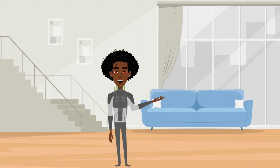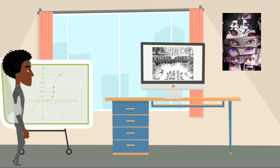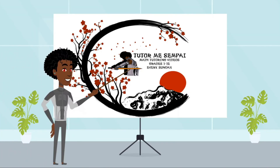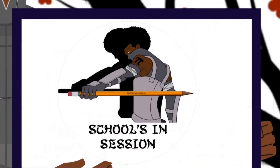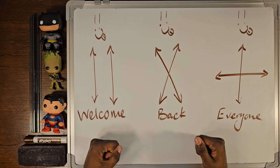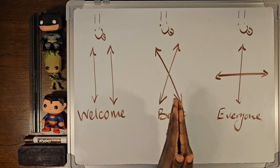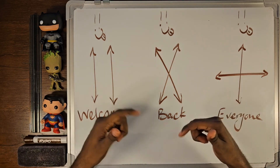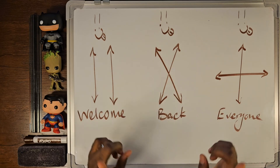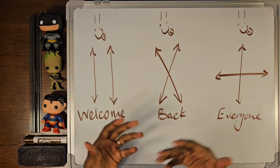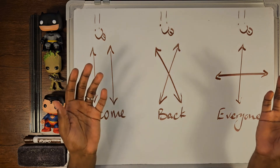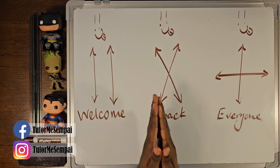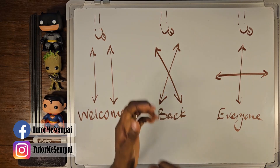Hey, I'm Courtney Waterman, your tutor, lover of anime, manga, and math, and you just tuned in to another session of TutorMe Senpai. Welcome back everyone. Today we're jumping into a fourth grade topic: parallel, intersecting, and perpendicular lines. If you're new to my channel, I'll be putting time codes in the description box below so you can skip ahead. This video is gonna have four parts, so leave a like, smash the subscribe button, and let's get started.